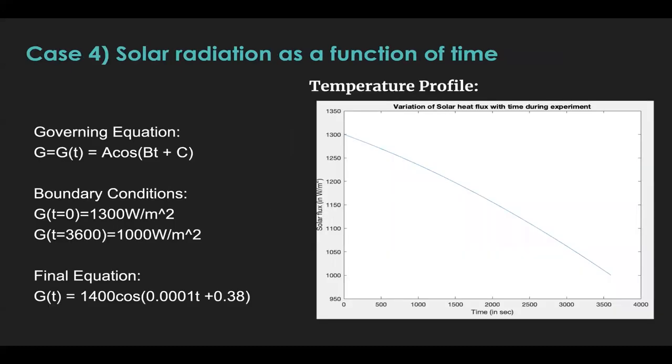To account for this, in case 4, we take the solar radiation as a function of time. We take G to be a sinusoidal function of the form A cos BT plus C. We take the boundary conditions G initially as 1300 Watt per meter square, that is during the start of the experiment. And after one hour of the experiment, that is T equal to 3600 seconds, we take the G value to be 1000 Watt per meter square.